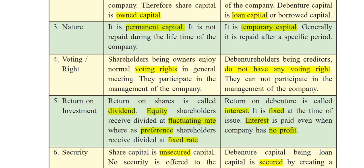Coming to the fourth point — voting rights. Shareholders have voting rights in the general meeting, as we have already discussed, and they participate in the management of the company. They have the right to participate in the company's affairs. But debenture holders, being creditors, do not have any voting rights. They cannot participate in the management of the company. Their amount will be returned to them, but other than that they have no voting rights nor any role in management.